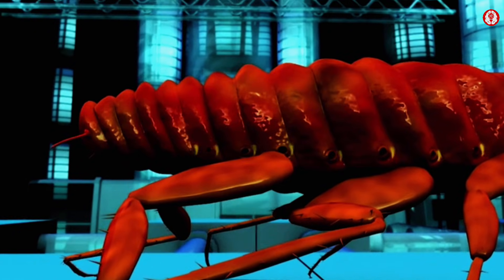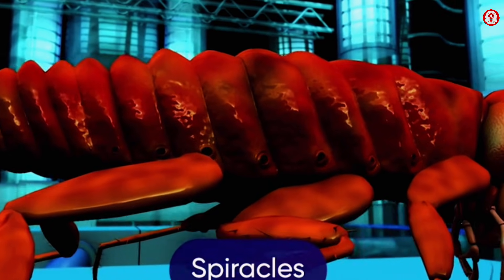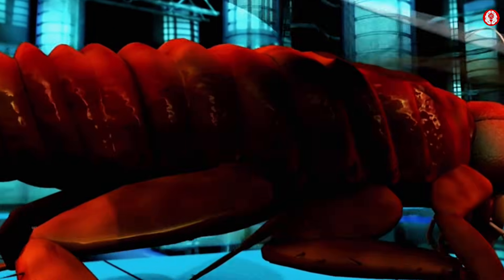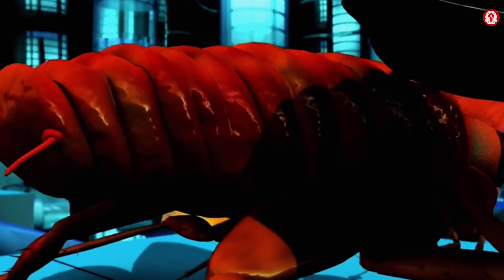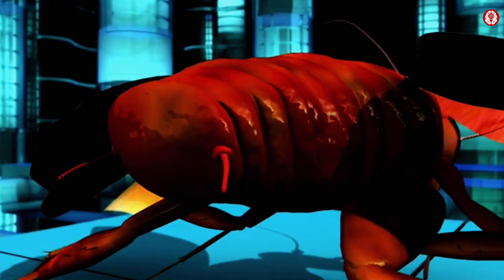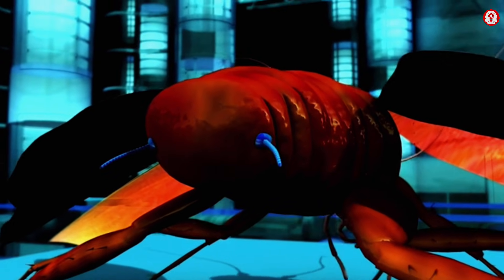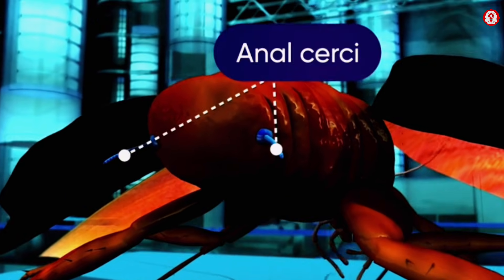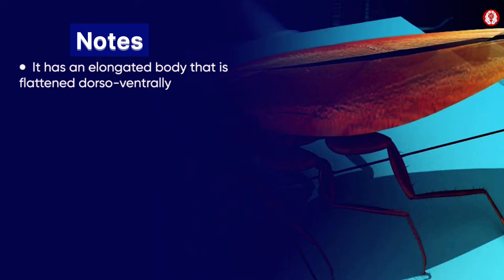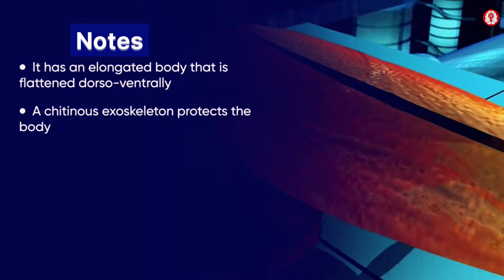The hind wings are transparent and membranous and are used for flying. Below the thorax lies the abdomen, made up of ten segments. A pair of respiratory spiracles is seen in each of the first eight abdominal segments. Both male and female cockroaches have a pair of anal cerci in the tenth segment.